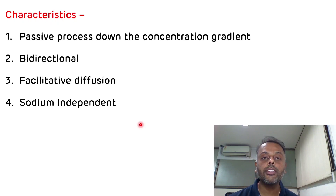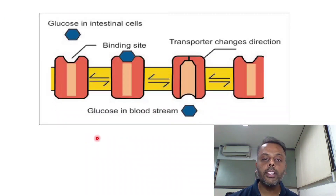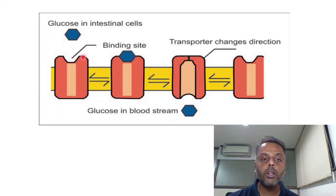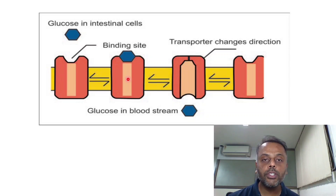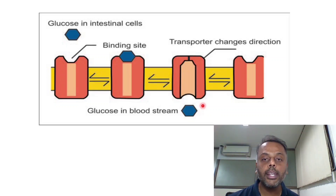The fifth characteristic is that transport of glucose by glucose transporters occurs by the ping pong mechanism. Here is a picture explaining this mechanism. Glucose binds to the transporter present on one side of the membrane. Once it binds, a conformational change occurs in the complex, exposing the binding site to the inner side of the membrane. Glucose is then released into the cell. The first state is the ping state and the second state is the pong state — that is the ping pong mechanism.